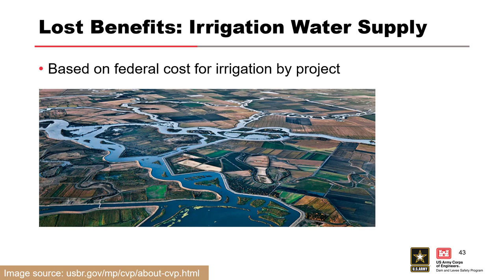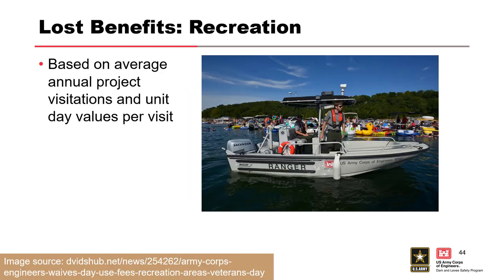There's also an irrigation water supply factor based on federal irrigation costs by project, calculated based on the time the project was first constructed. Within the Corps, we have a tool produced by the Modeling, Mapping, and Consequences center that aggregates all this data into one central location, making it easy to calculate these benefits across our project portfolio. We can help other agencies talk through where to find this data.